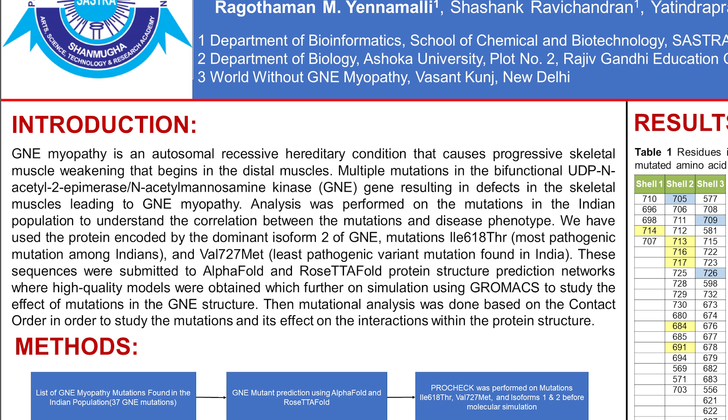Isoleucine-618 is considered the most pathogenic mutation among the Indian population, while valine-727-methionine is considered the least pathogenic mutation. Our objective was to use deep learning-based protein structure prediction methods like AlphaFold and RosettaFold to understand the mechanism of action of these proteins along with the mutations.